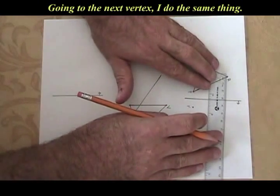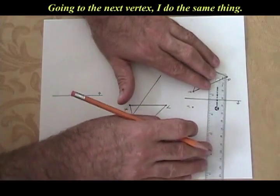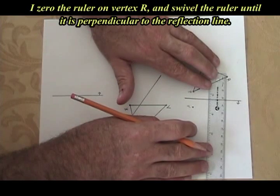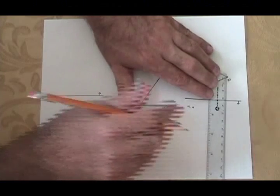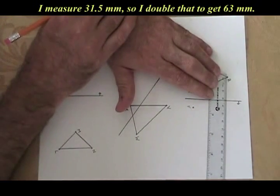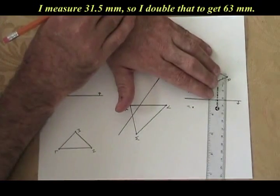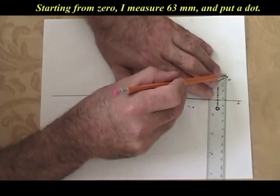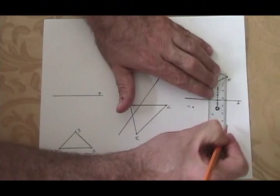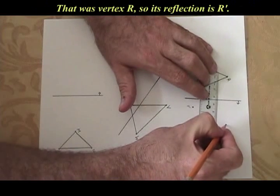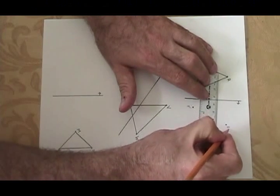Going to the next closest vertex, I do the same thing. I zero the ruler on the vertex. I make sure the edge of the ruler is perpendicular to the reflection line. I measure 31.5 millimeters, so I double that and I get 63. Starting from zero, I count 63 millimeters and I put a dot. That was vertex R, so its reflection is R'.